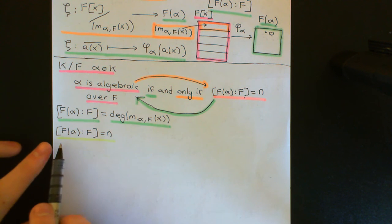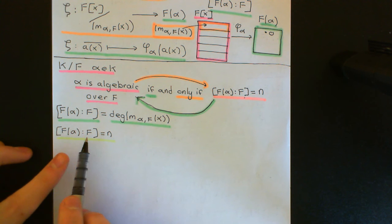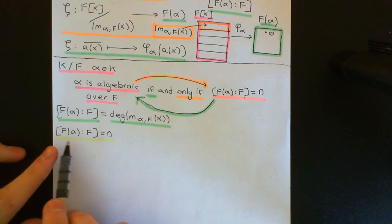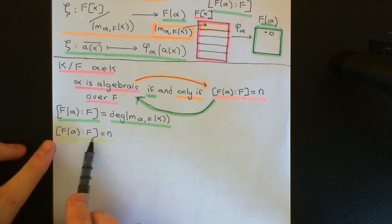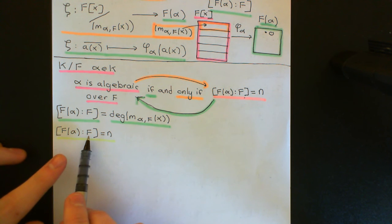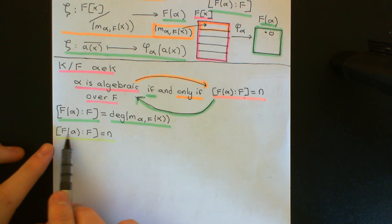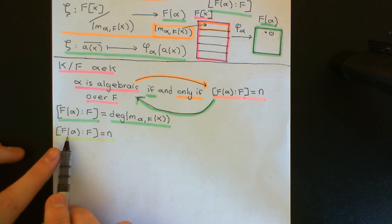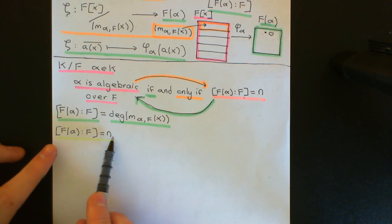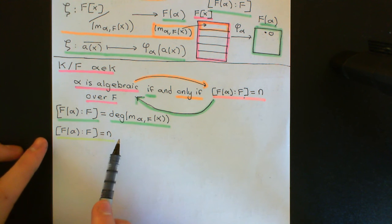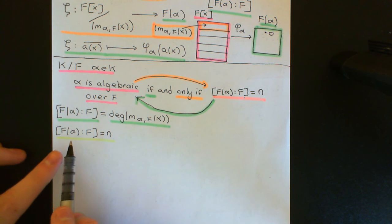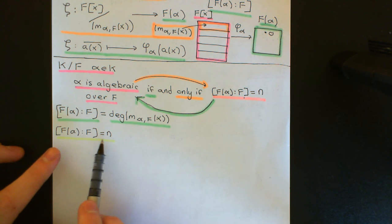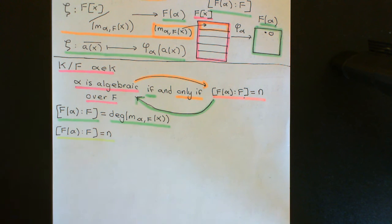How can I do this? Remember, the degree of a field extension over another smaller field is the dimension of the field extension viewed as a vector space over F. So this tells me that when we view F(alpha) as a vector space over F, we have n basis vectors. Therefore, if I take a set of elements of the field extension that has n plus one elements, that set has to be linearly dependent — any set of vectors with more vectors than the dimension must be linearly dependent. That's a basic fact from linear algebra.